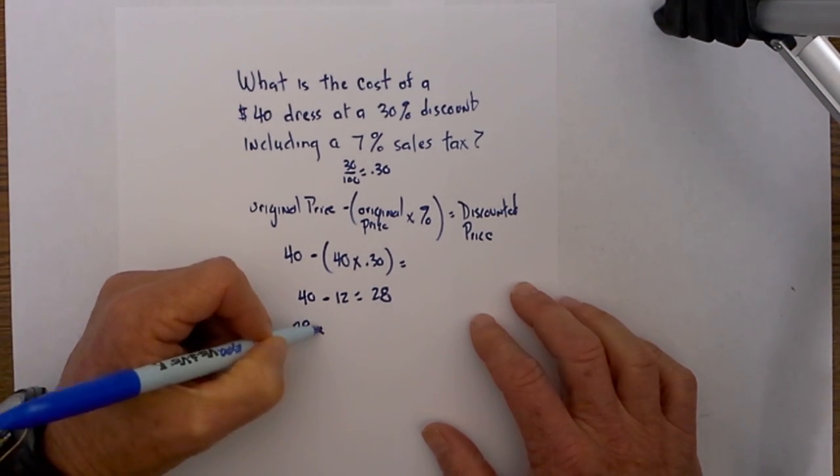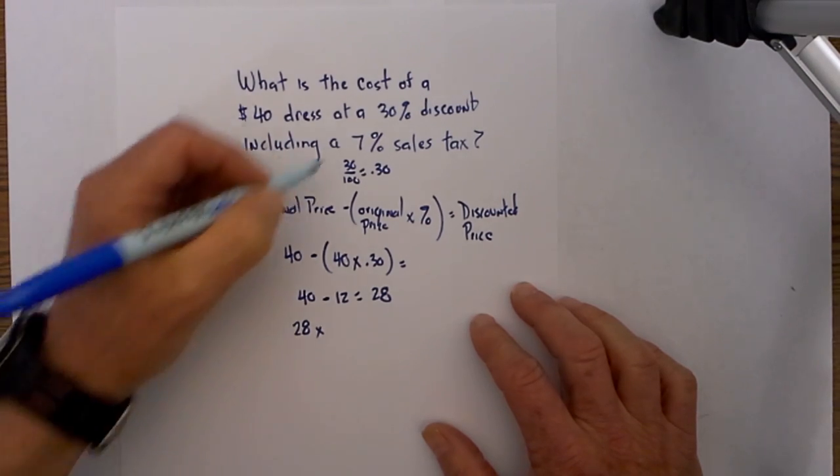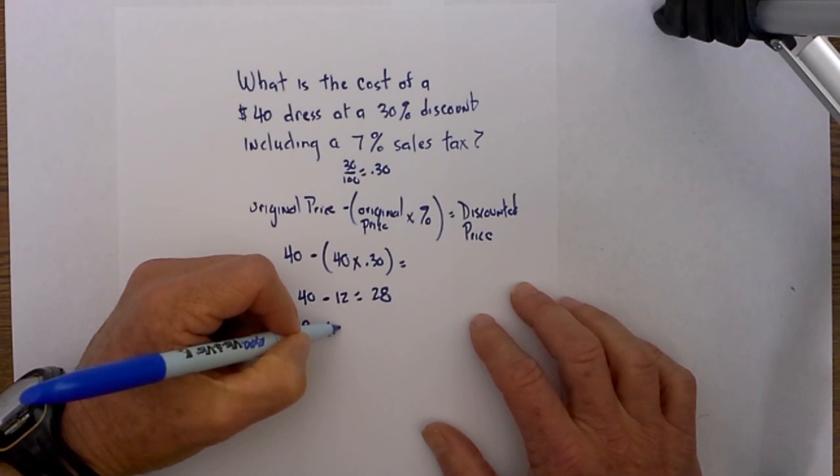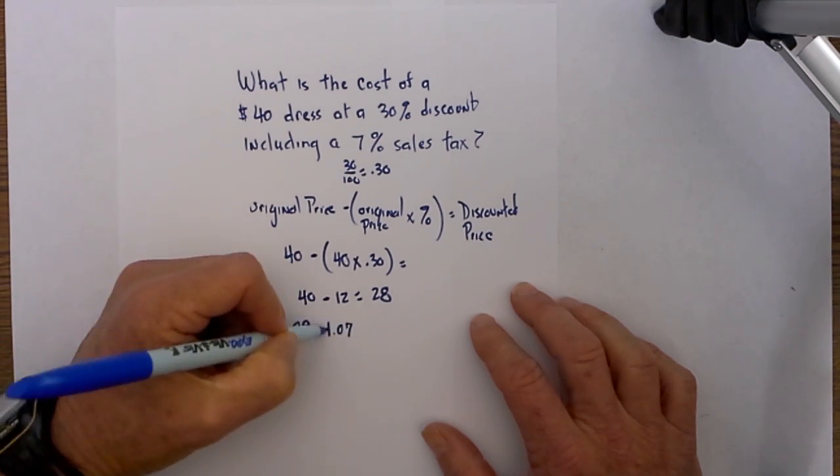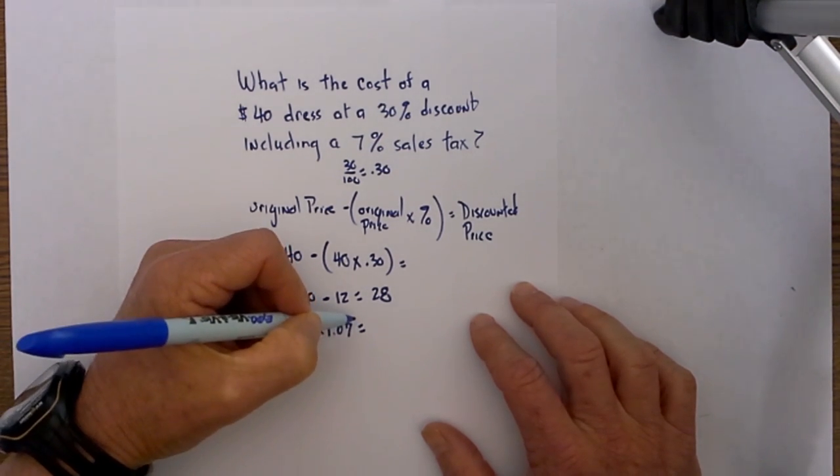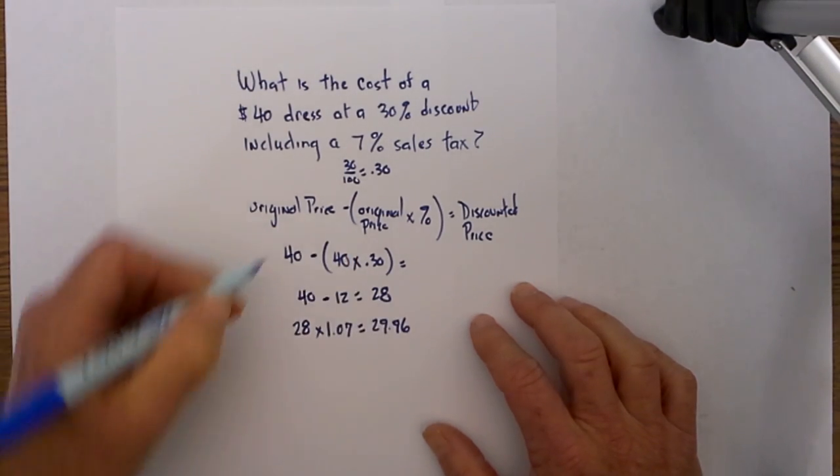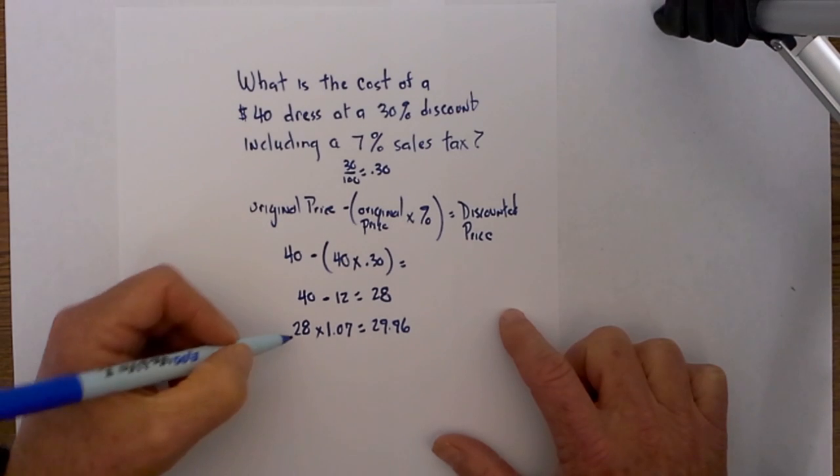We can do this two ways. A shortcut method is to take the sales tax of 7% and multiply it by 1.07, and that will equal 29.96. If you want to know why this works, I can show you.